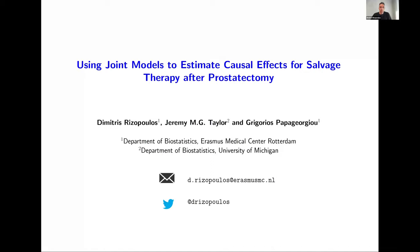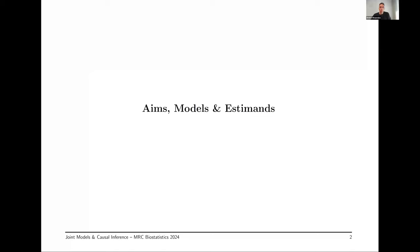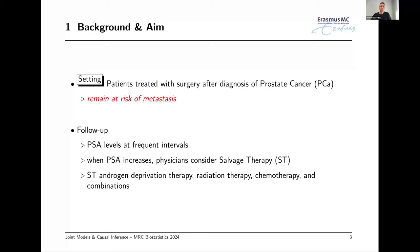I always try to find interesting applications in various contexts, and I always get new questions from colleagues in the clinic or internationally to motivate new research. This is one such example: using joint models to estimate the causal effects for salvage therapy after prostatectomy. This is joint work with Jeremy Taylor from the University of Michigan and a previous PhD student of mine, Gregorios Papayuriou. Let me start with the clinical motivation and data, and then introduce the approach we developed.